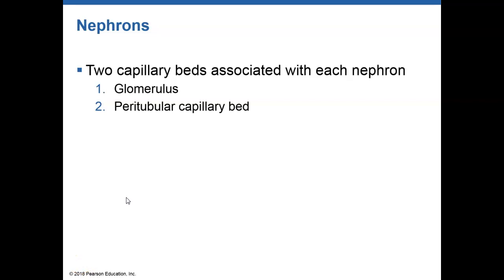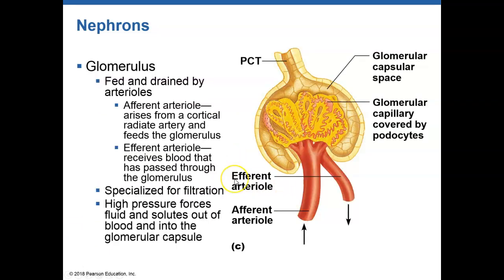Let's look closer at our nephrons. There are two different types of capillary networks associated with our nephrons. The glomerulus is within the glomerular or Bowman's capsule where filtration occurs. The glomerulus is fed by afferent arterioles that bring blood into the capillary bed, and efferent arterioles bring blood out of that capillary bed.